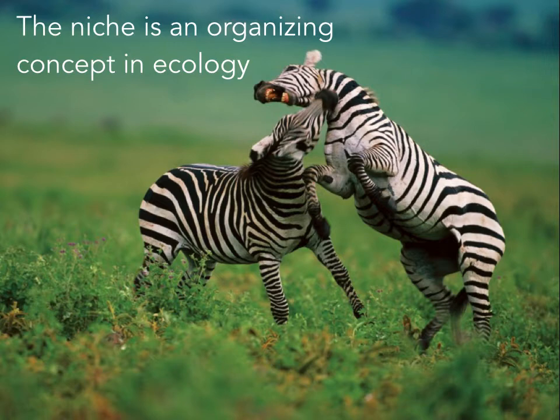But each species can also be characterized by the set of physical and biotic conditions under which it can persist — that is, survive and reproduce — and the range of resources it uses. In this lecture, we will examine a key concept that ecologists use to describe species, not through their adaptations per se, but through the conditions and resources that they require, and in turn, that they alter.